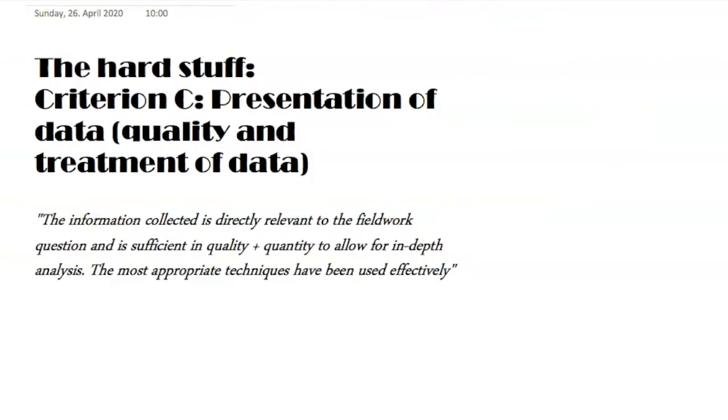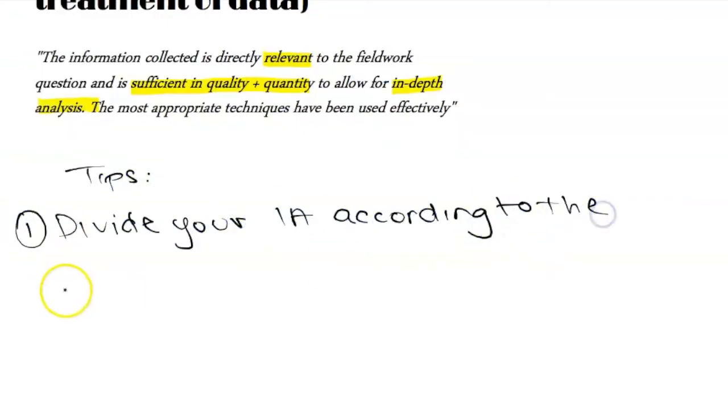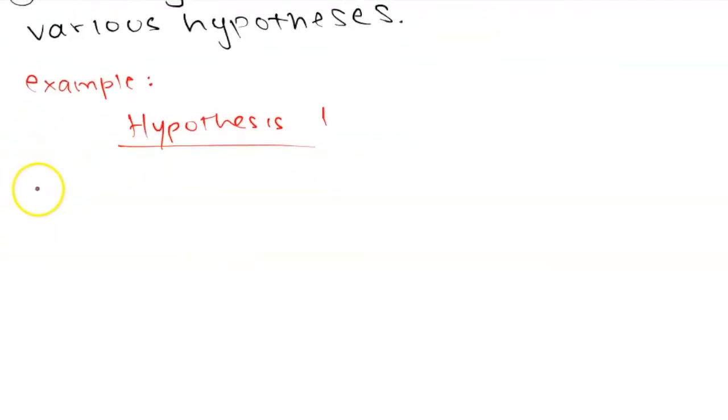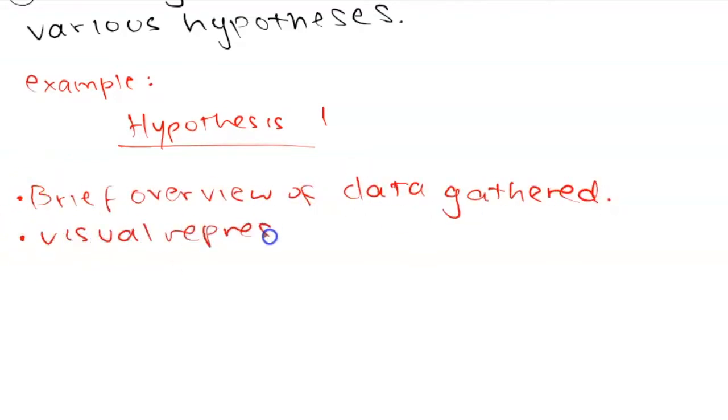Now we're going to start with the more difficult stuff, the thing that is really going to determine whether you get a 7 or not in your IA. And this is the treatment of data. On the rubric, it says that the information collected is directly relevant to the fieldwork question and is sufficient in quality and quantity to allow for in-depth analysis. The most appropriate techniques have been used effectively. So the keywords here are in-depth analysis and relevant. The first tip that I have for you is to make sure that all your data gathered is relevant to the fieldwork question. It's to divide your IA according to the hypothesis. So for instance, first hypothesis, that environmental degradation follows the Butler model. Then all of your primary data goes under this hypothesis. You give a brief overview of the data gathered, what the trends are. Maybe you include an annotated diagram of the sites.